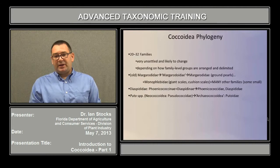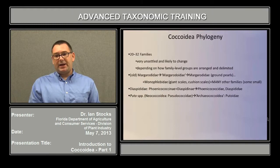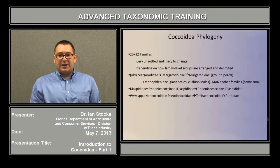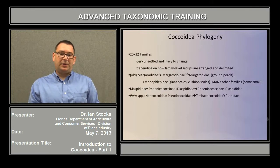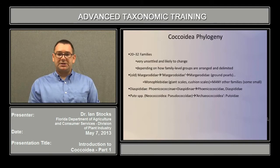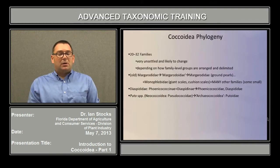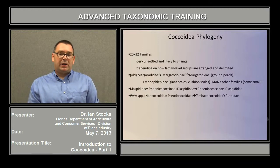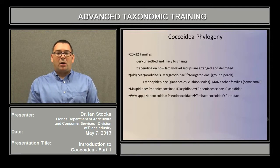Another example is the armored scale family Diaspididae. At one point, it included two subfamilies, the Phoenicococcinae and the Diaspididae. But more recent analysis has shown that the armored scales are actually quite distinct from the date scales, the Phoenicococcidae, so they are now classified as separate families. And another example is the genus Puto. Traditionally, this has been included as a type of mealybug, or Pseudococcidae, in the superfamily concept Neococcoidea. But recently, we understand this statistically to be not very closely related at all to mealybugs, and it's placed in its own family, the Putoidae, in the fairly distantly related group, the Archaeococcoidea.